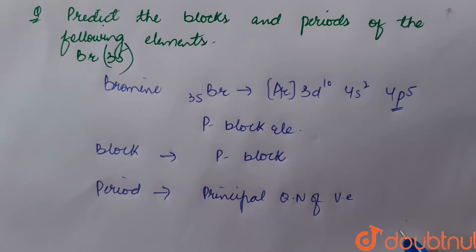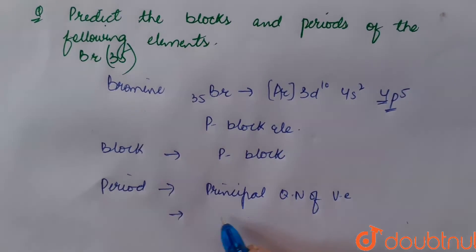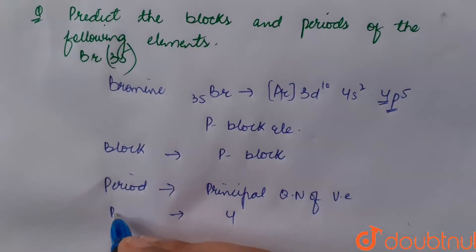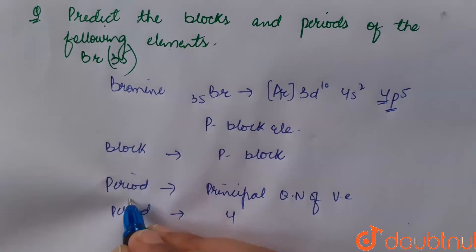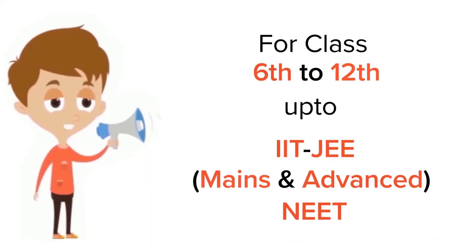The principal quantum number of balance electron is four, so bromine belongs to fourth period of product table. So bromine belongs to p block and the fourth period of product table.